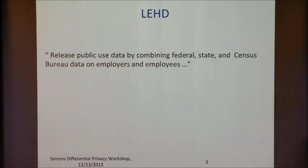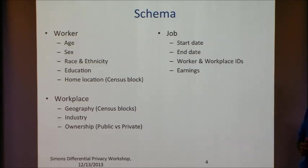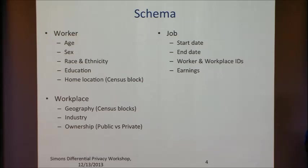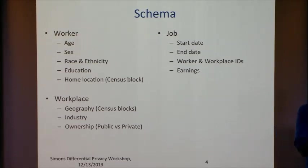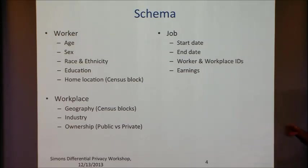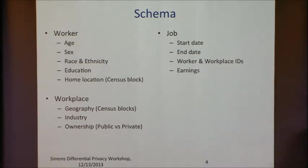You can think of their schema as having three tables: a worker table, a job table, and a workplace table. The worker table has properties of workers, the workplace table has properties of workplaces (employers), and the job table has which worker is working in which workplace — for each individual you have records saying you started this job at this time, ended at this time, and certain properties like earnings associated with that job. The goal is to take this data, create some private version, and release it for analytics.